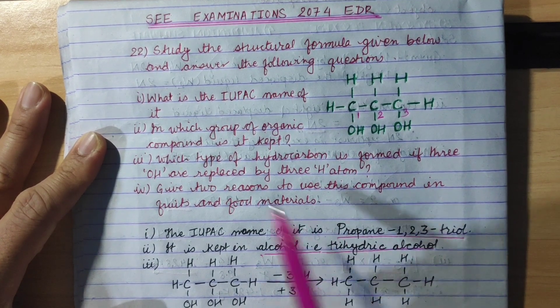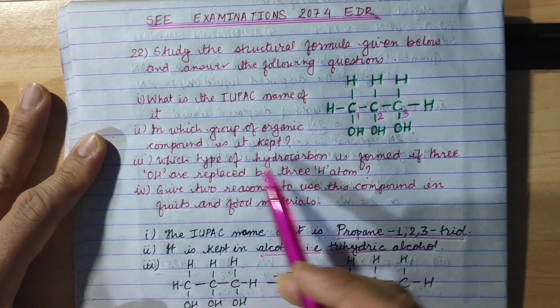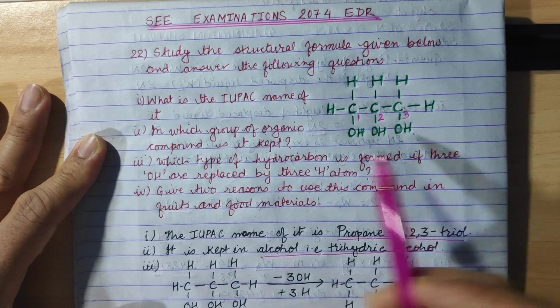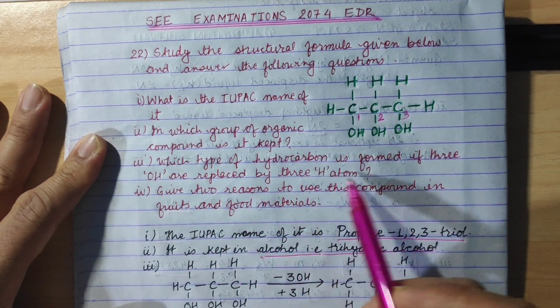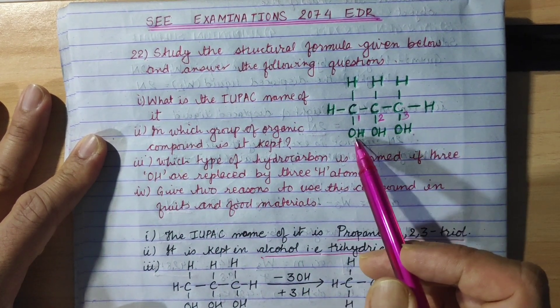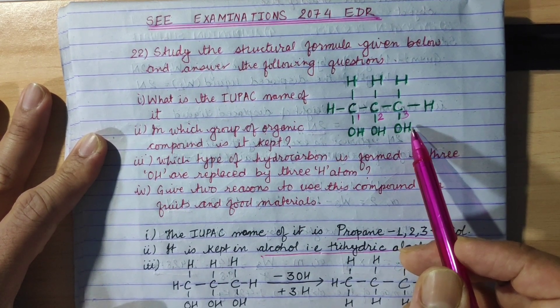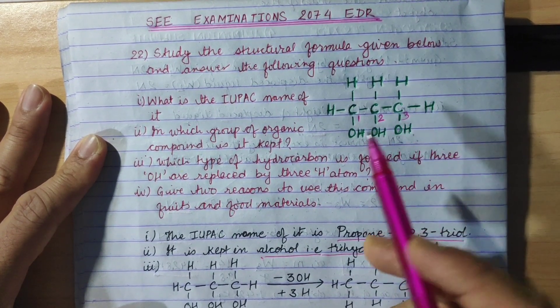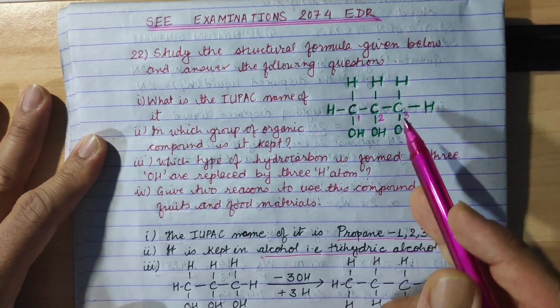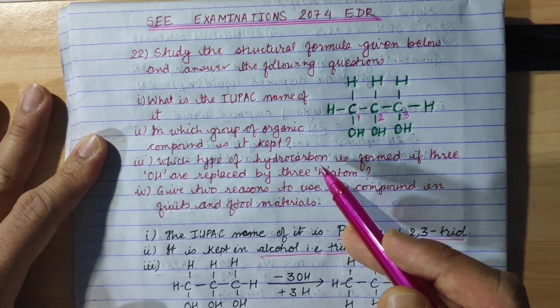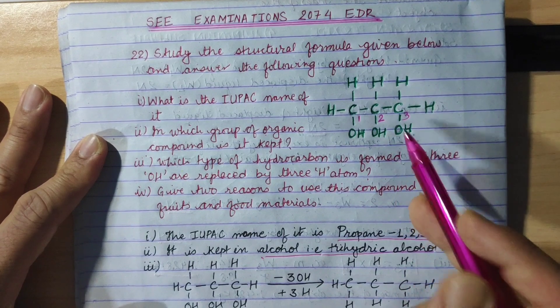Now the question is, which type of hydrocarbon is formed if 3 OH are replaced by 3 hydrogen atoms? In this case, 3 OH are replaced by 3 hydrogen atoms. The reaction will be zero.